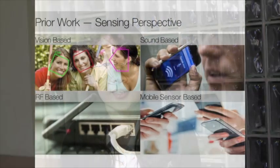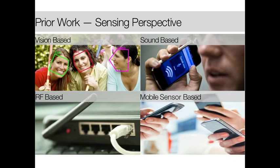Many smart building applications in facility management and operation require detailed occupancy information. But current sensing systems require either dense deployment, or need users' input such as RFID tags, or installing apps in your smartphone and collecting your inputs.